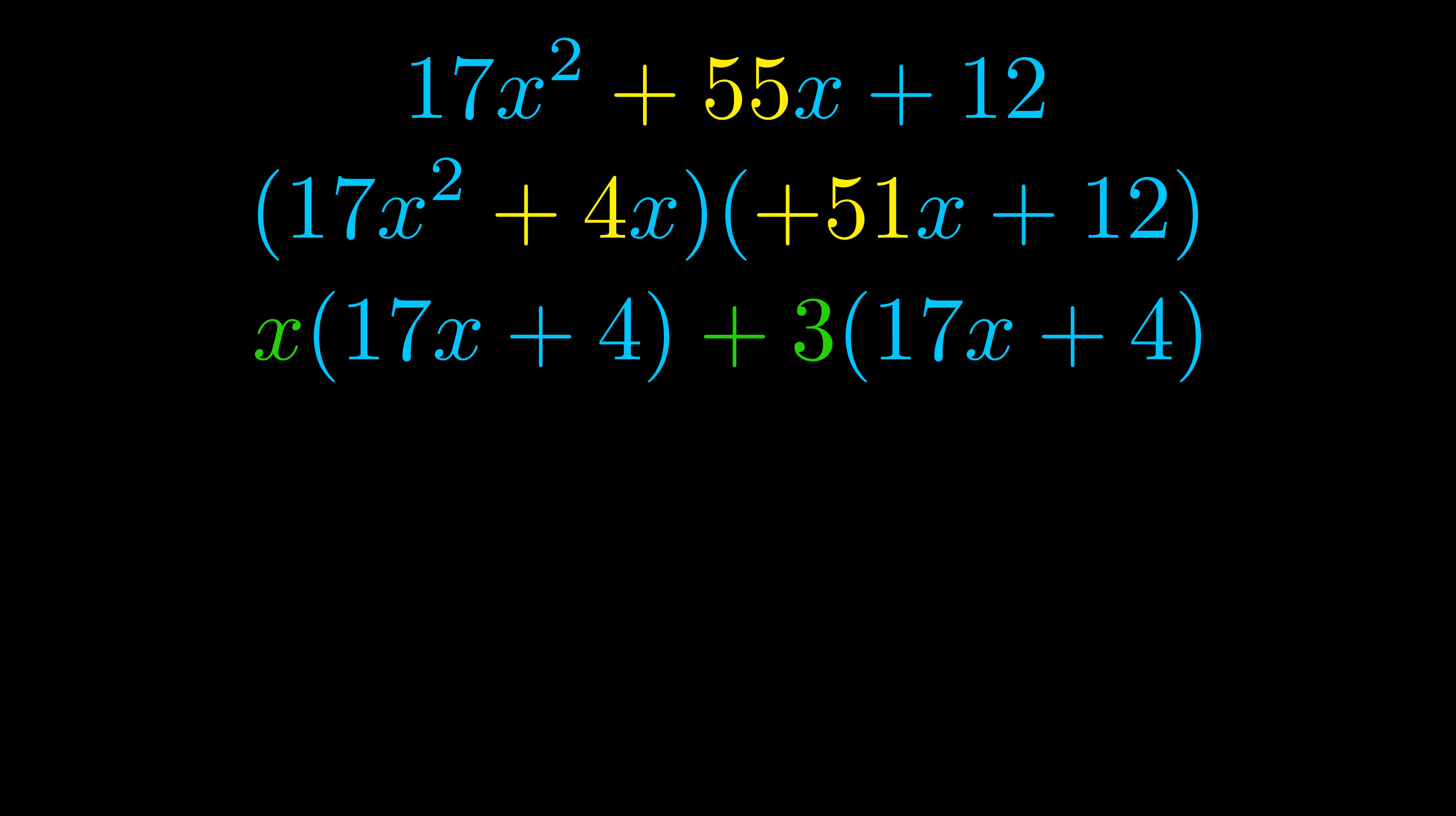We can see the greatest common factor is now outside in green. Notice also how what remains inside of the parentheses is the same in both cases. The blue values are the same. Those blue values will become one of our factors and we will combine the two green values, the GCFs that we pulled out, to get the other one. And that is our fully factored equation.